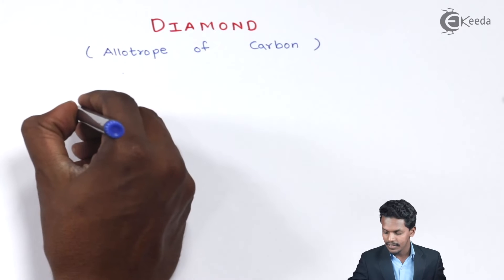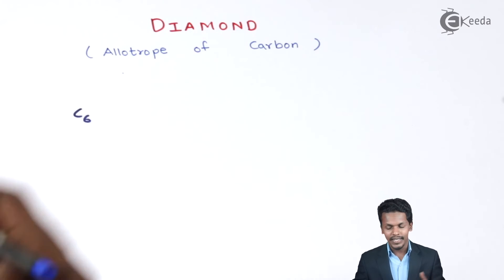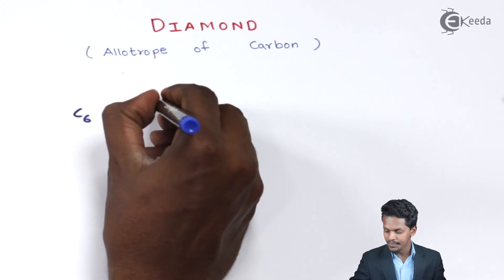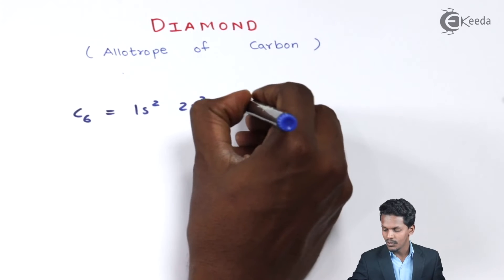Carbon has an electronic configuration that is 1s² 2s² 2p².